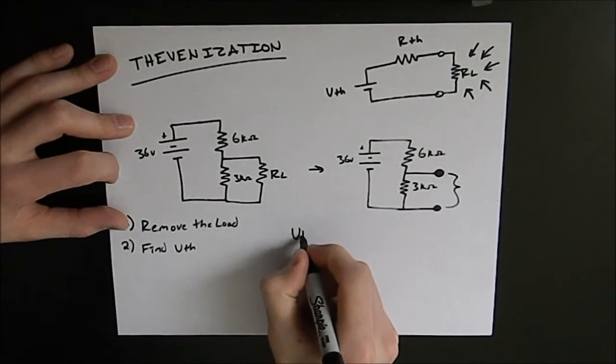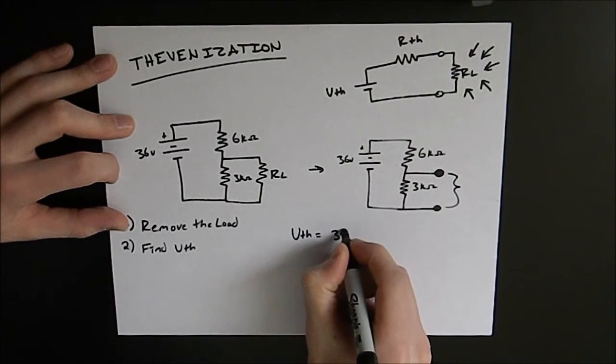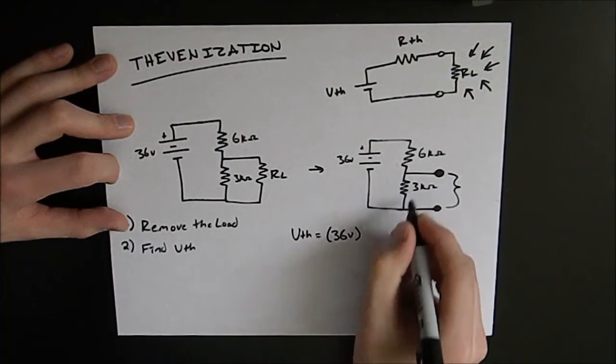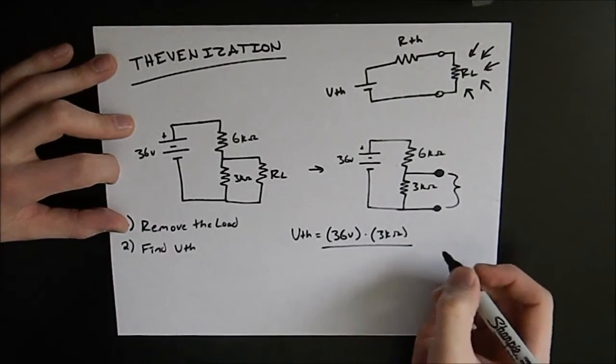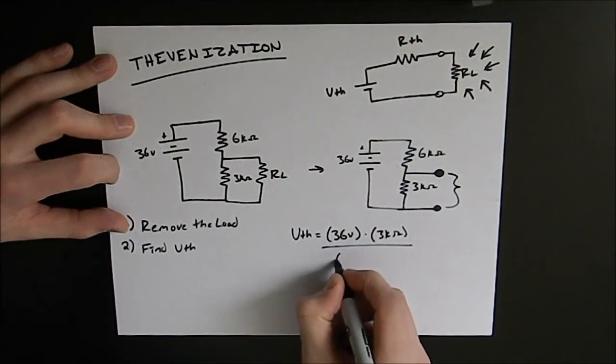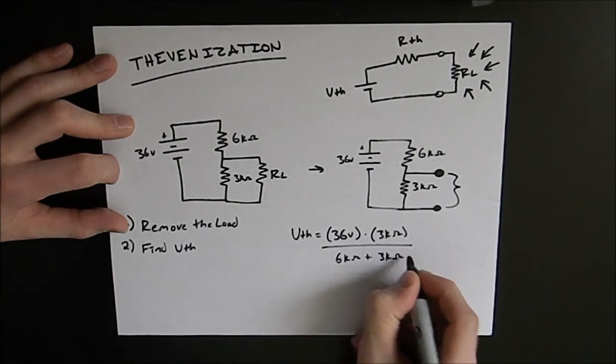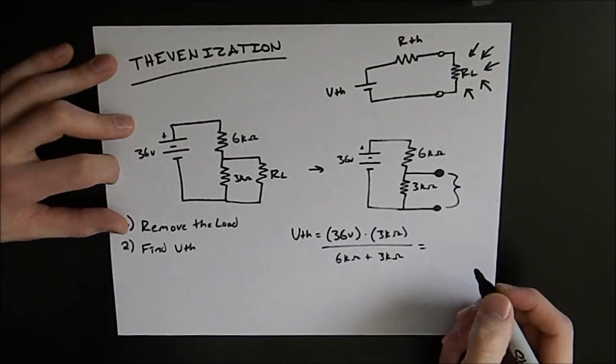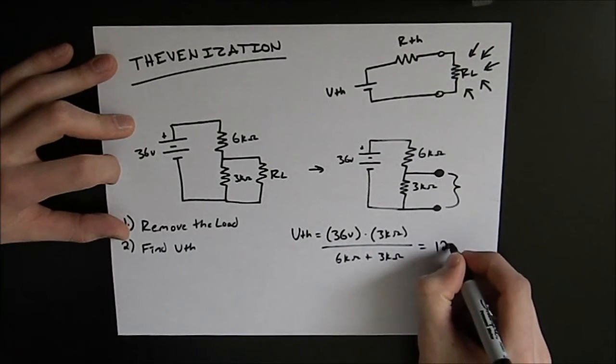So to find that our Thevenin voltage is equivalent to the battery voltage 36 volts times our 3 kiloohm resistor divided by the sum of the resistance. So that's going to be 6 kiloohms plus 3 kiloohms. Now what that gives us is a Thevenin voltage of 12 volts.